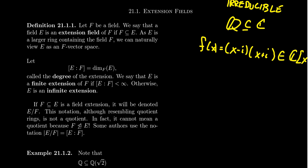So if this dimension is a finite number, that is, if E is a finite dimensional F vector space, we say that E is a finite extension of F. Otherwise, if E is an infinite dimensional F vector space, we say that E is an infinite extension of F.